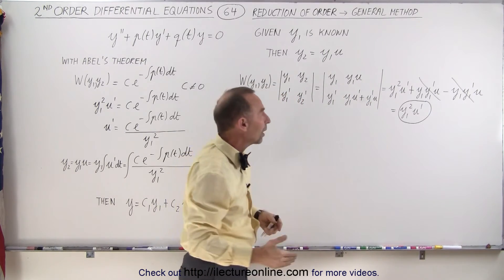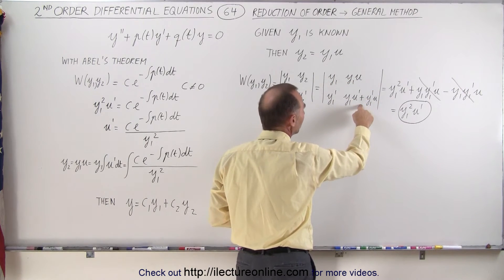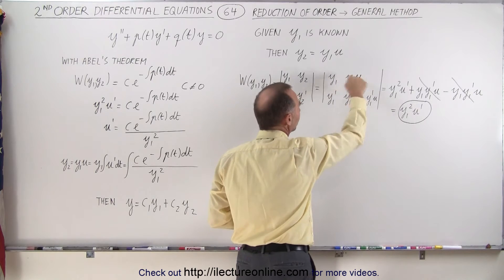If we now calculate the Wronskian, we multiply y1 times this component here, this element, and then subtract the product of these two.